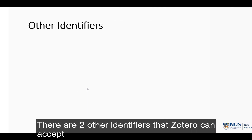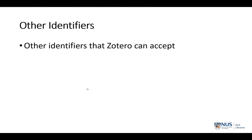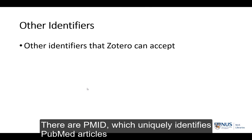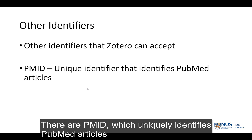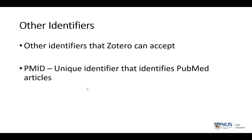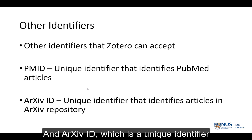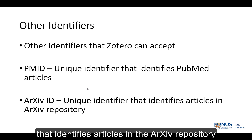There are two other identifiers that Zotero can accept. They are PMID, which uniquely identifies PubMed articles, and ArXiv ID, which is a unique identifier that identifies articles in the ArXiv repository.